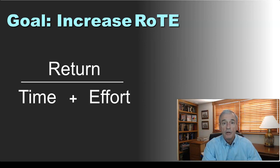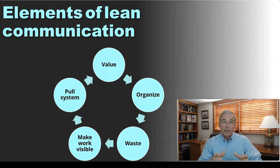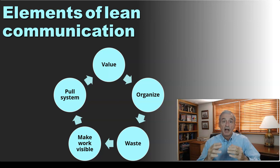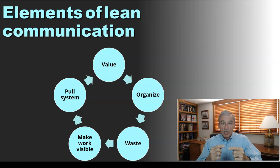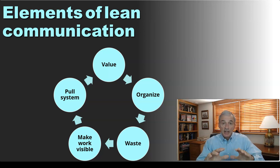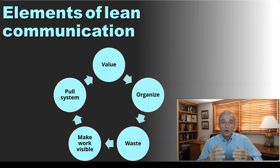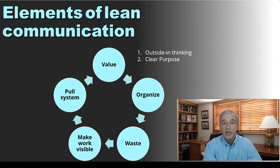Once we look at it this way, we start deploying some of the elements of lean to communication. There are five elements of lean, as you can see on this slide. We start, number one, with value — value is the starting point and the ending point. Then we organize our message in a way that makes it clear what's coming next. We cut out waste as much as possible. We make work visible — making the workflow visible to ourselves and to the listener — which makes it easier to understand our logic. And finally, we use the pull system, because we can never fully understand what the listener is thinking, so we let the listener dictate the pace at which they absorb the message.